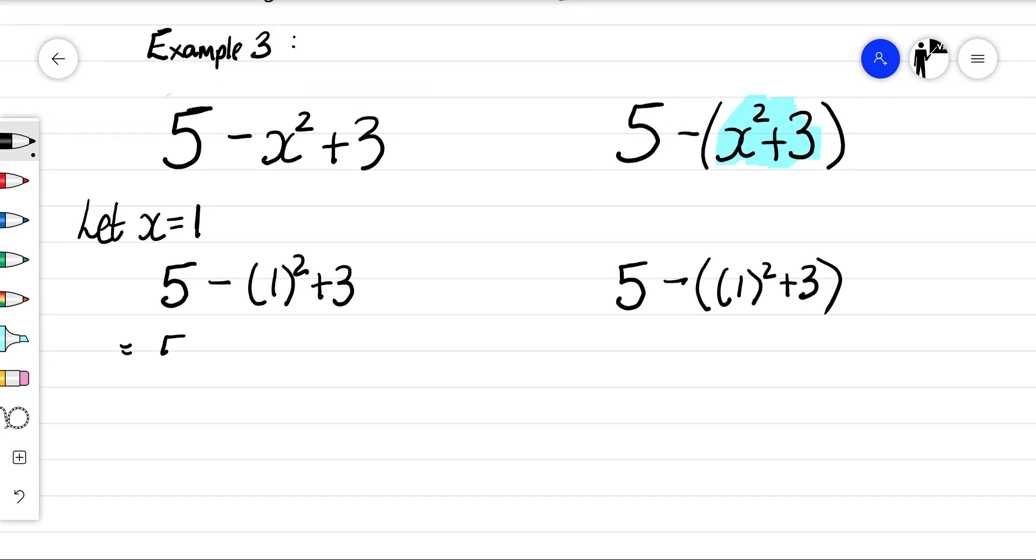I know that 1 squared is 1, and I'll do the same here, 5 subtract 1 plus 3. So applying the order of operations, we've got subtract and addition. It doesn't matter the order that we do because we've got the same power. So 5 take away 1 is 4 plus 3 is 7.